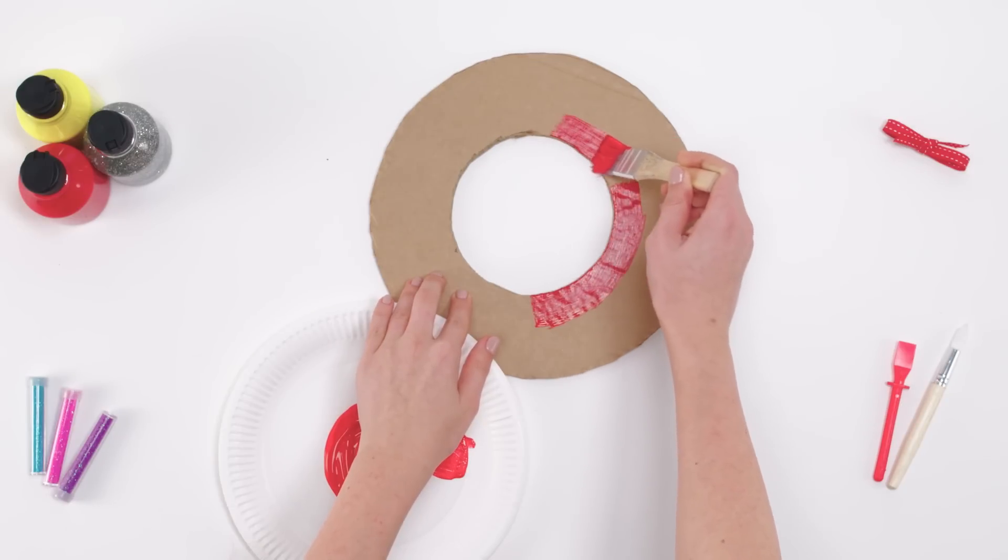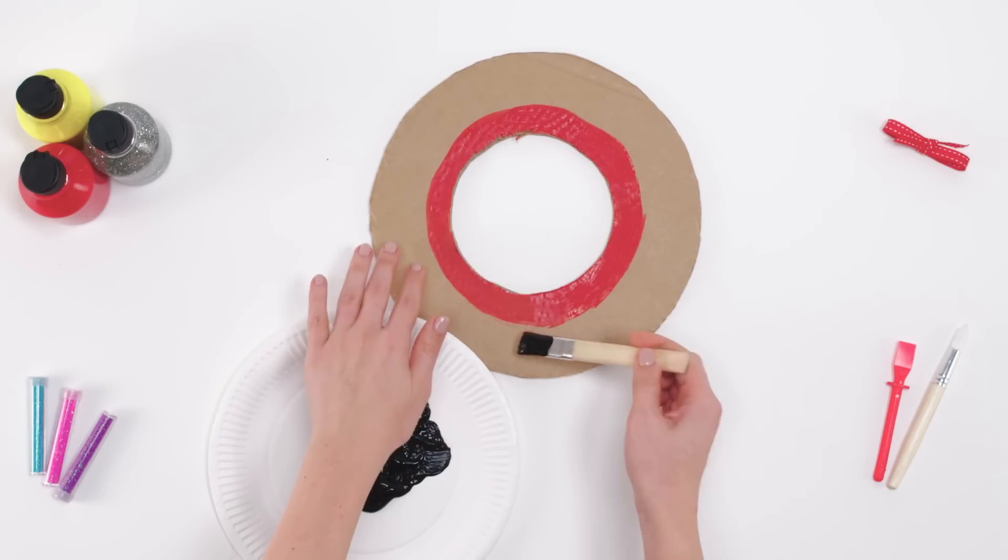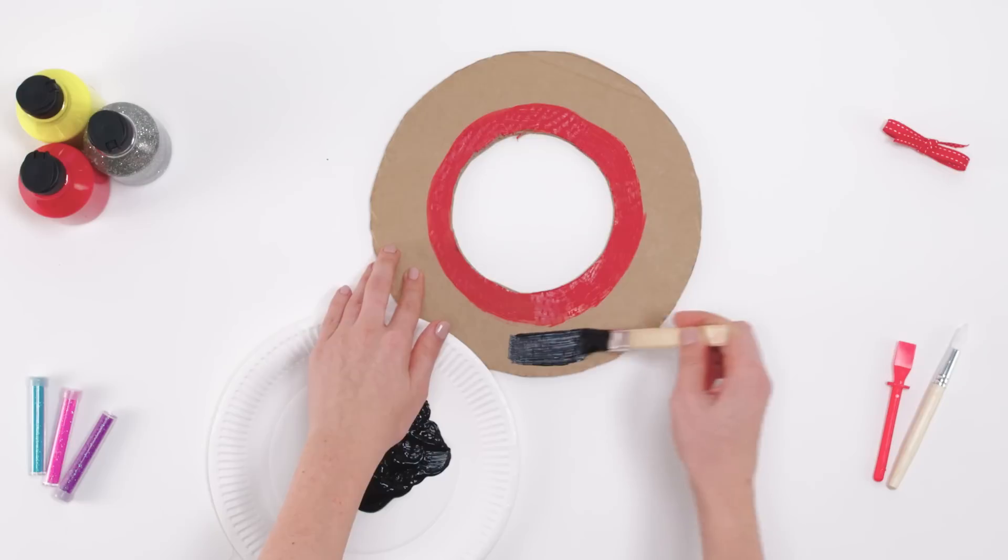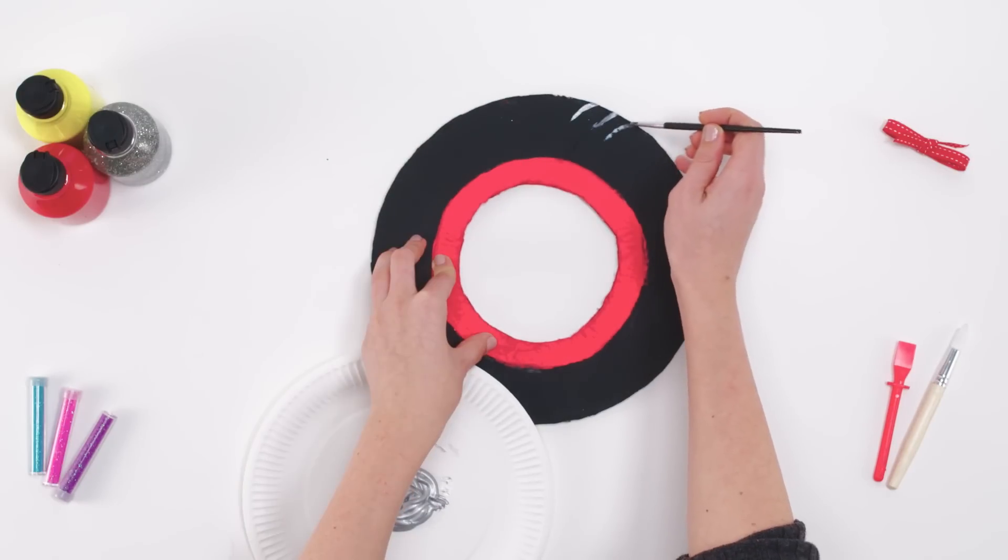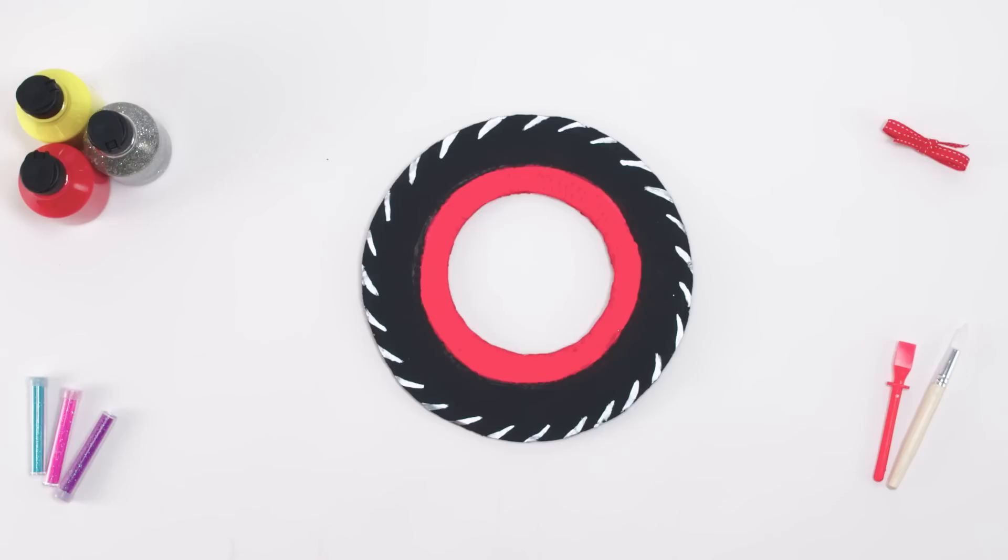Using a brush, paint a red stripe on the inner circle of the tire, then use black paint to paint the rest of the tire. Once it's dry, use silver paint to brush on tire marks on the outside.